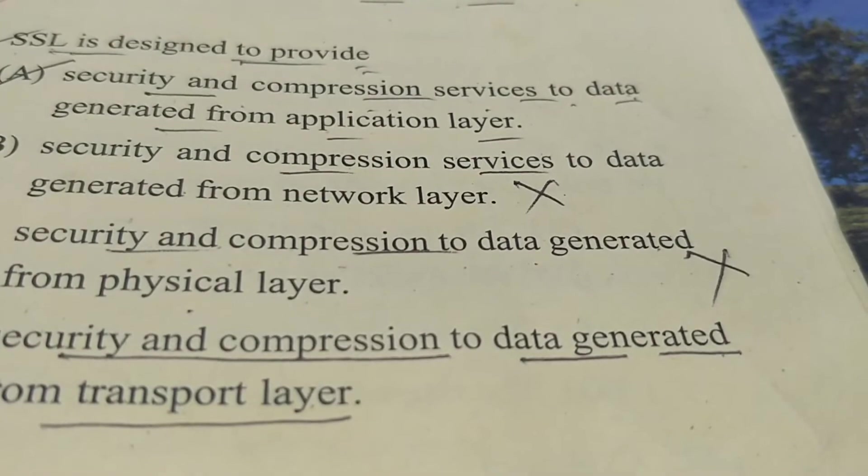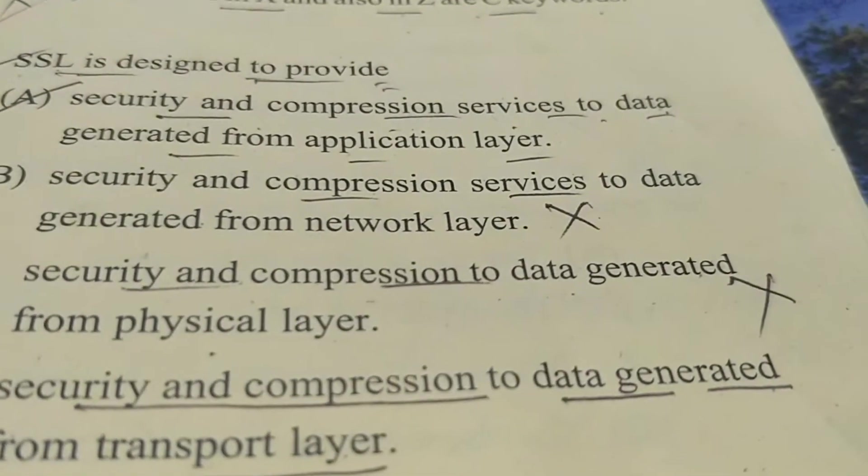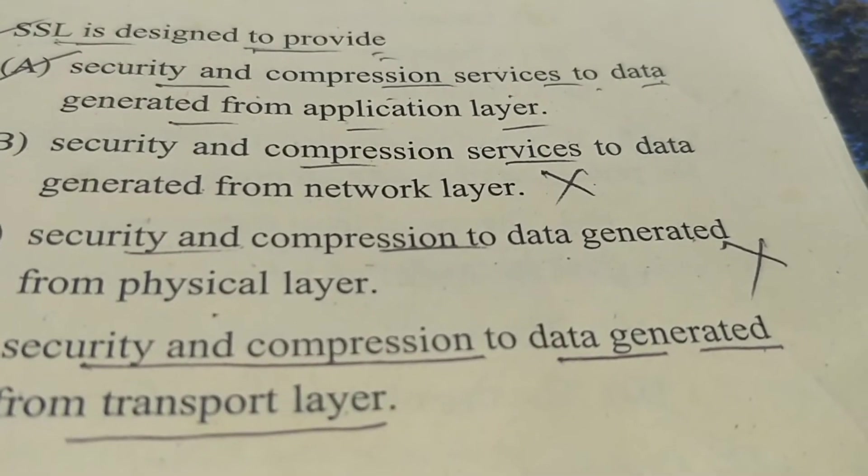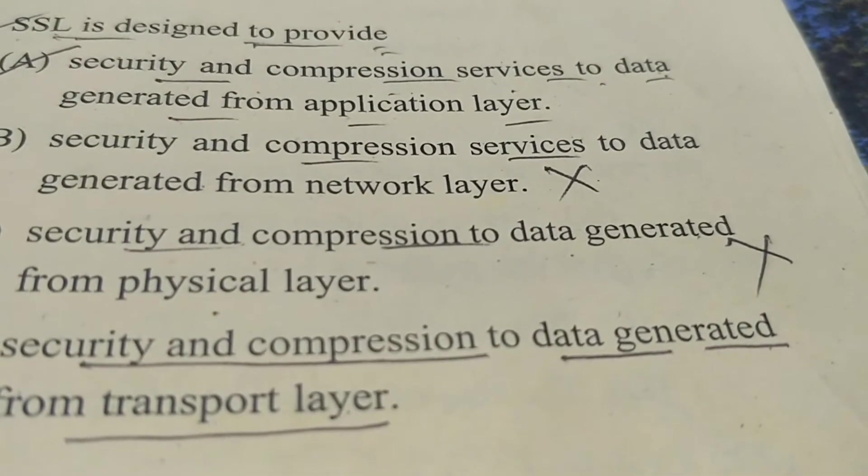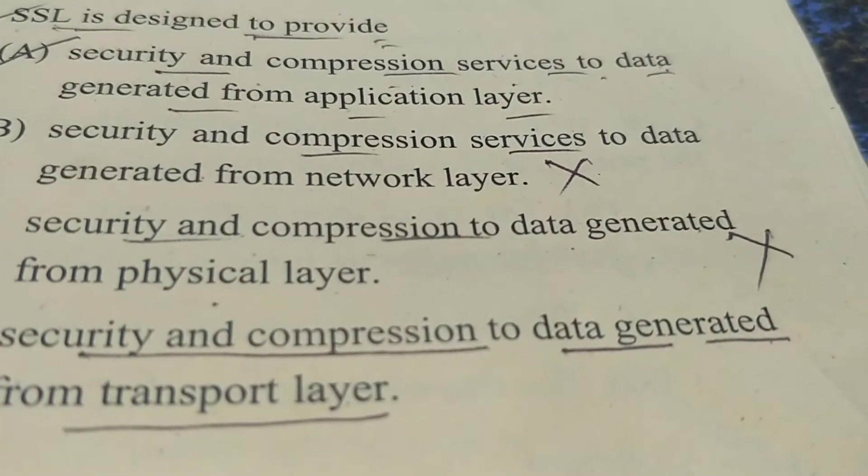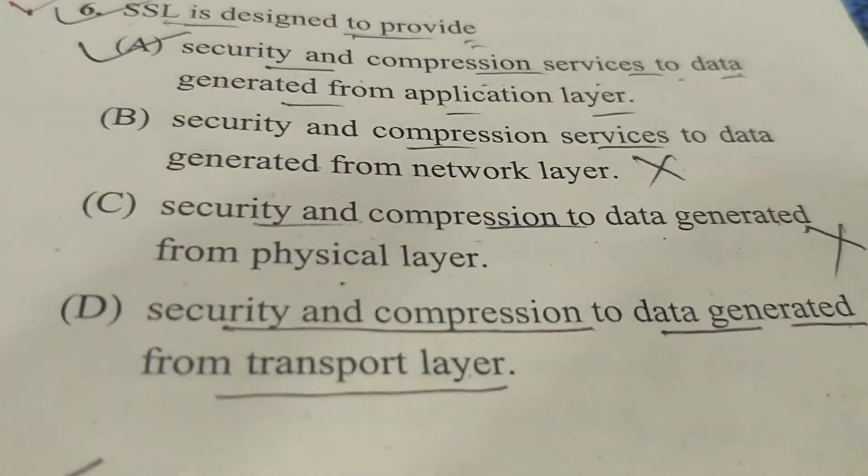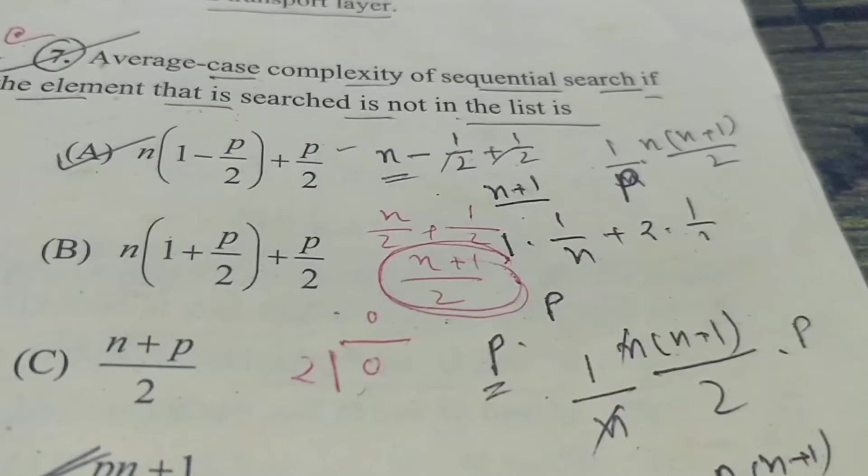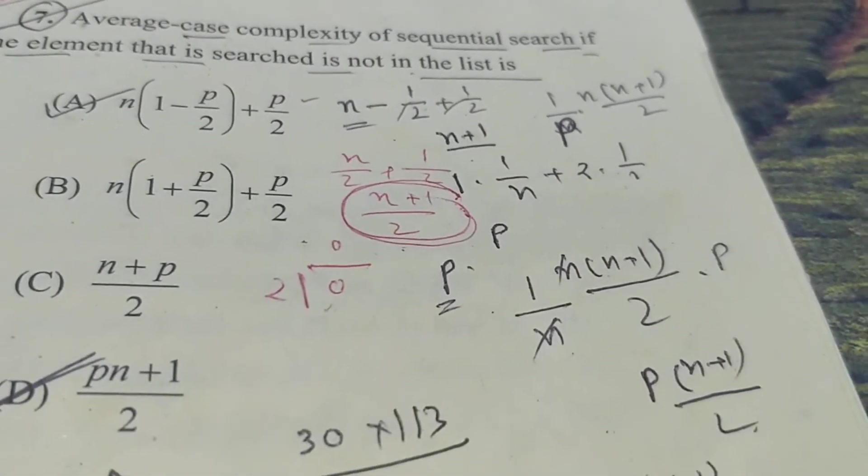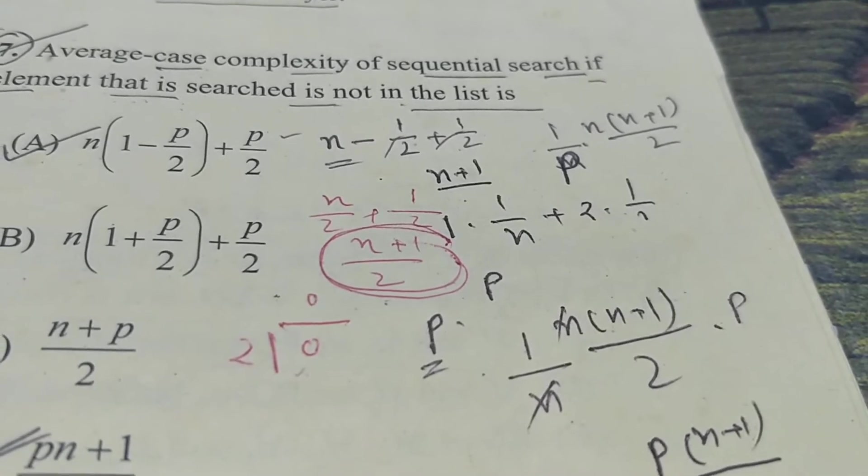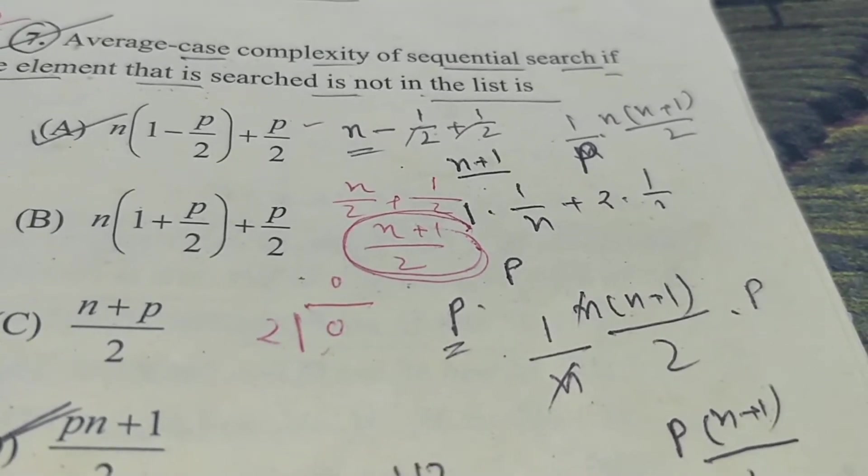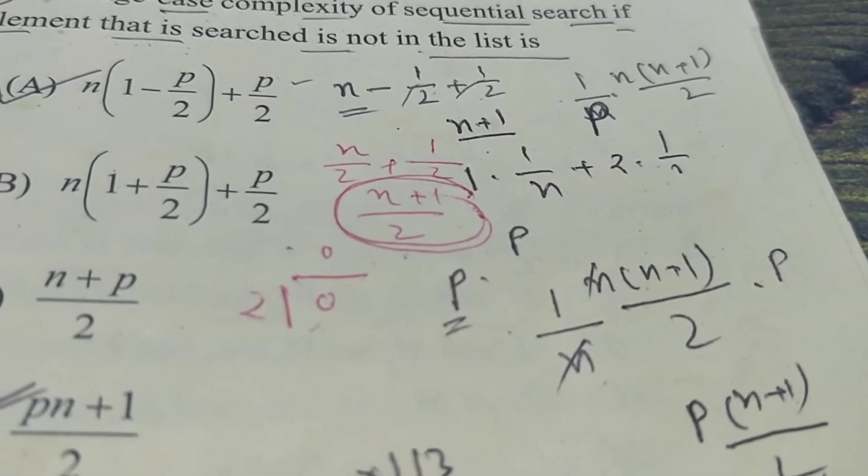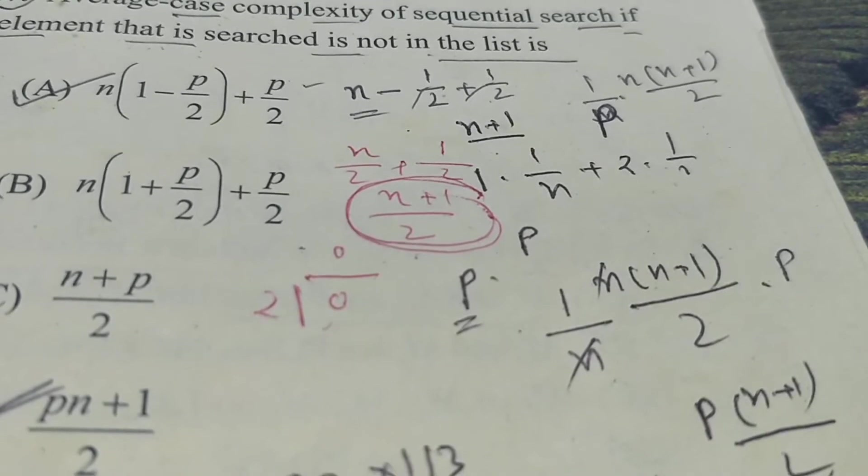Now question number six: SSL is designed to provide - SSL means Secured Socket Layer. It is an application layer protocol. So option A: security and compression service to data generated from application layer. So A is the correct answer. And the next question: the average case complexity of a sequential search, means linear search, if the element that is searched is not in the list. So when the element is not present it is a worst case, but here is the average case complexity. So the correct answer is P(n+1)/2. That is option D.